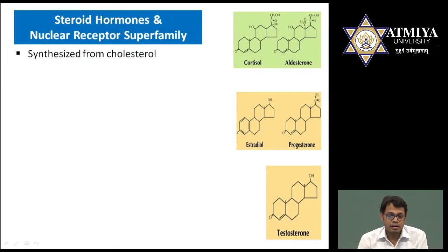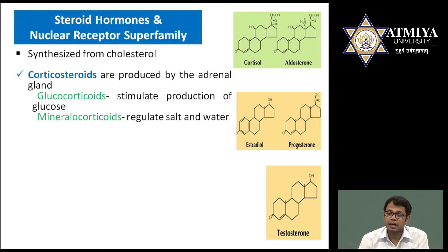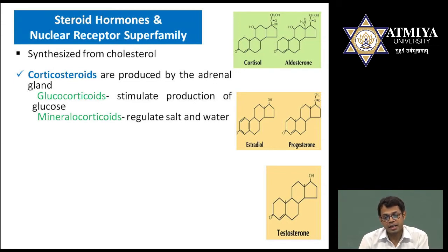Let's look at steroid hormones and nuclear receptor family members. All steroid hormones are synthesized from cholesterol. For example, corticosteroids — derived from the adrenal gland, especially the adrenal cortex — are of two famous categories: glucocorticoids, responsible for glucose production, and mineralocorticoids, which regulate salt and water balance by acting on the kidney.